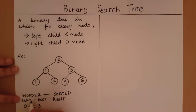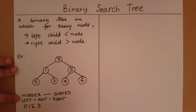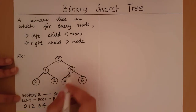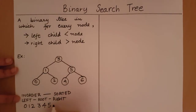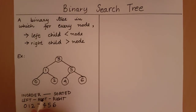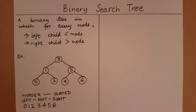Now that I have printed the left subtree of three and the root three itself, I go to the right subtree of three. I go to the left subtree again and print it out since it's a leaf element, then print the root five, then the right subtree which is six. The entire tree rooted at three is completely traversed, and as you can see, the in-order traversal returns the elements in sorted order.